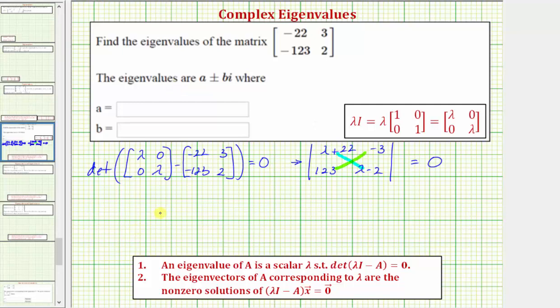So our equation, called the characteristic equation, is the quantity lambda plus 22 times the quantity lambda minus 2 minus negative 3 times 123 equals zero.